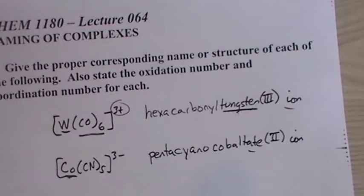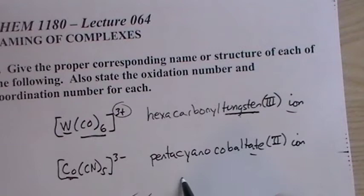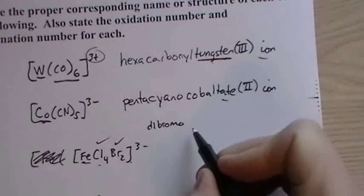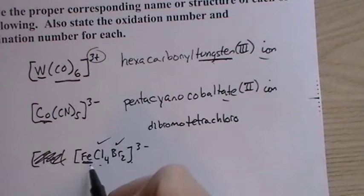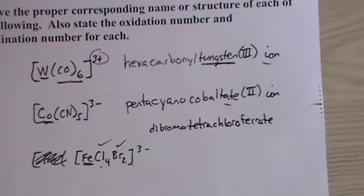Now we have iron, and it's part of an anion, but now there's two different kinds of ligands. We have bromo and chloro, so we do dibromo. And if you run out of room, you can go to the second line. But then we have 4 chlorine, so tetrachloro. Now, because it's an anion, we have iron here. We don't call it ironate. We call it ferrate.